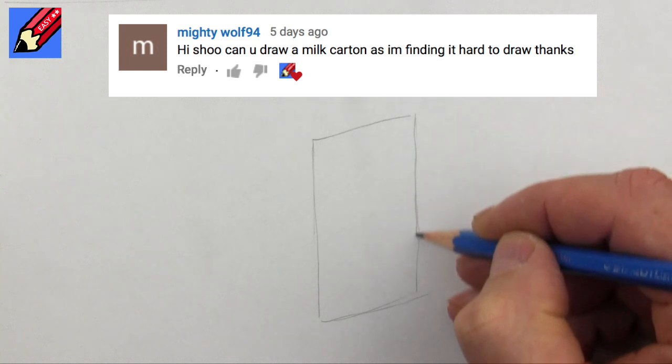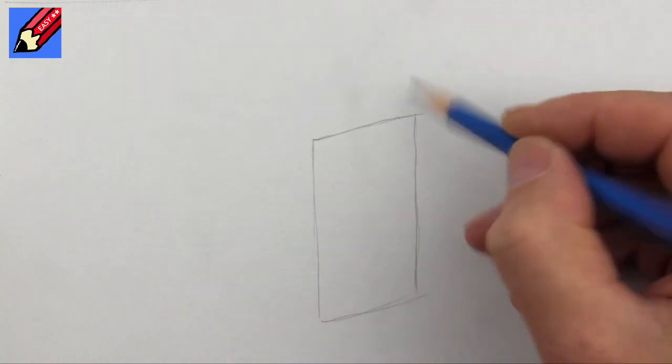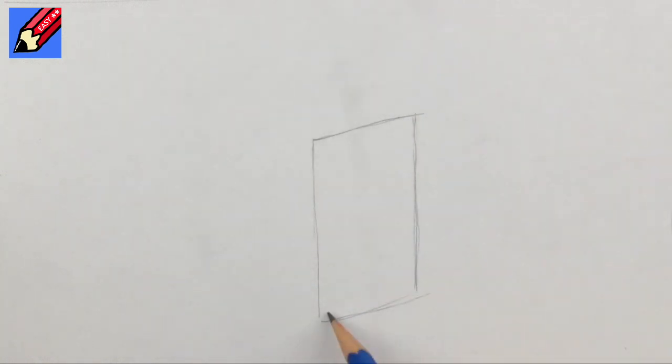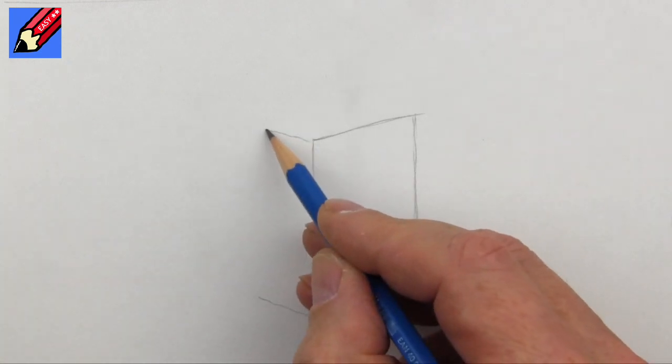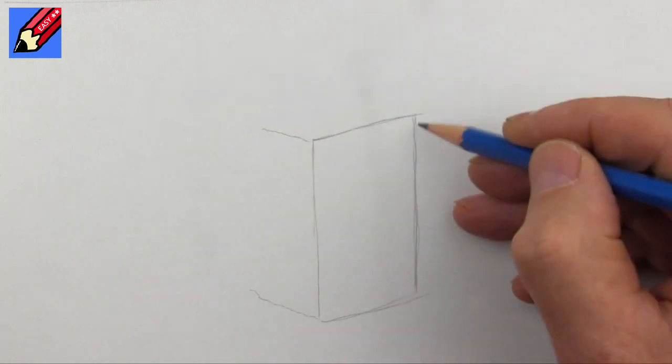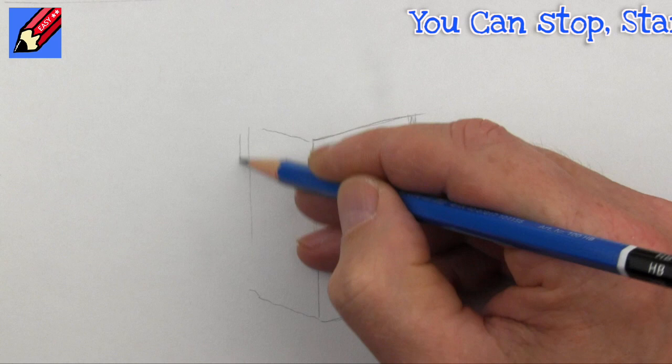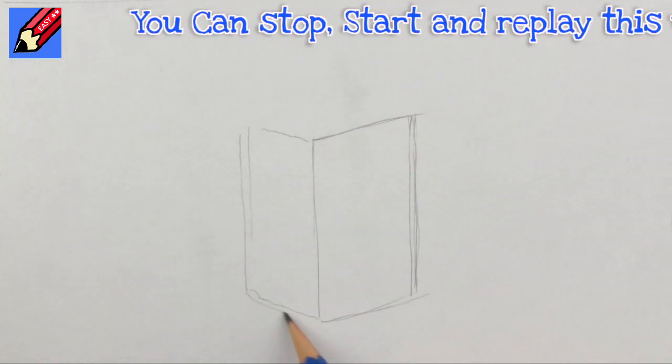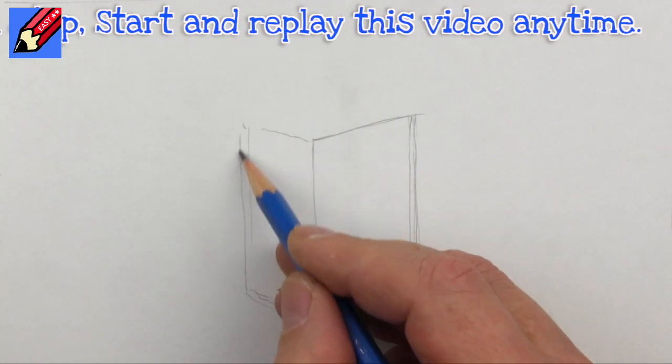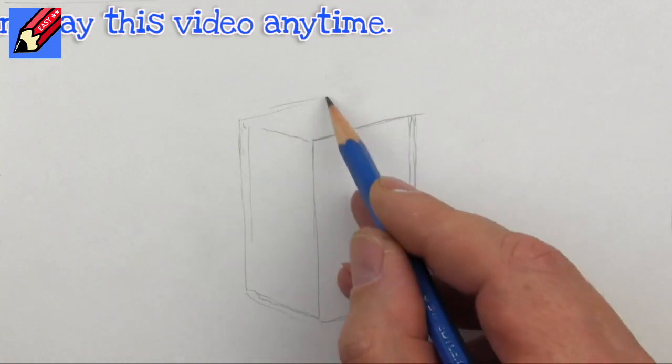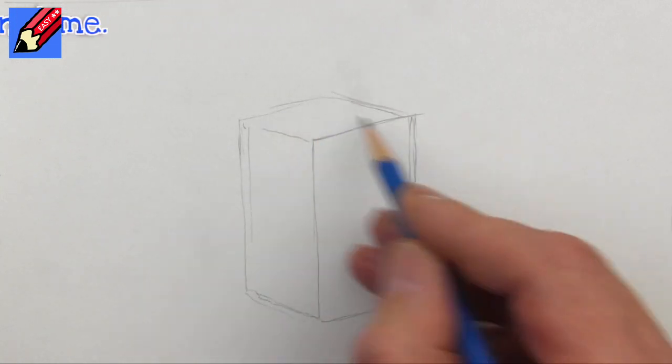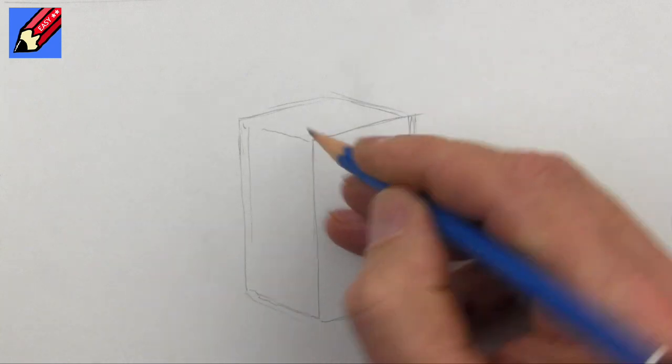I'm going to start off by drawing a rectangle which is going to be the front face of the milk carton, and then I need to draw another rectangle which is going to be the side. I'm going to make that just slightly thinner. It wants to feel quite square in cross section here, so that will go up across there. Yeah, that feels about right, so about there for that line.